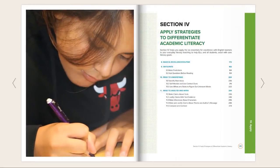I love Section 4. This is where we put all the essentials into action to help students meet specific academic literacy goals. A teacher can flip right to this section, turn to the standard and skill they want students to master, for a wealth of lesson-ready resources.